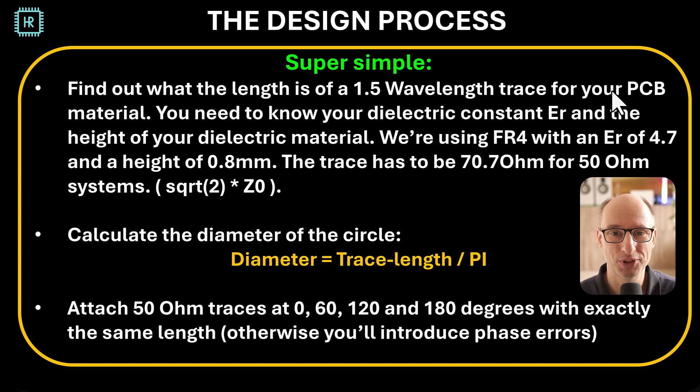So what does the design process look like? Well, it's actually super simple. The ring has a length of 1.5 wavelengths. All you need to do is find out for your dielectric material and your layer stack-up how long that 1.5 wavelengths is on your board, and then you calculate the diameter of a circle that has this circumference. You do that by simply calculating this formula: diameter is trace length divided by pi. So this is where I messed up radius and diameter, which caused me to end up at 3 gigahertz instead of 1.5 gigahertz.